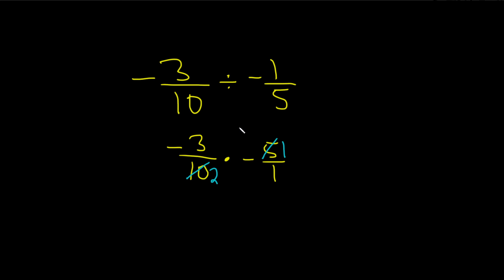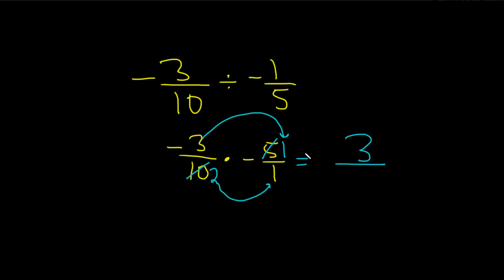And now you can just multiply straight across. 3 times 1 is equal to 3, over 2 times 1 is equal to 2. And what about the signs? Well, we have two negatives, so the answer is positive.